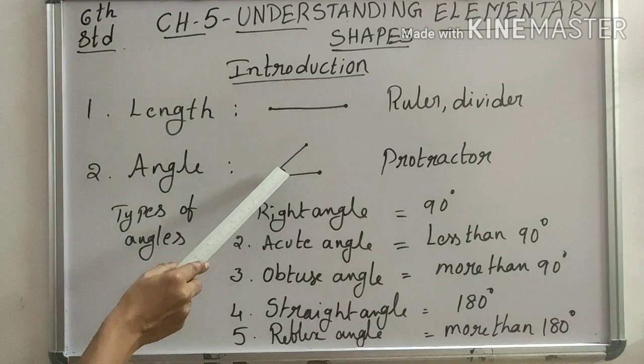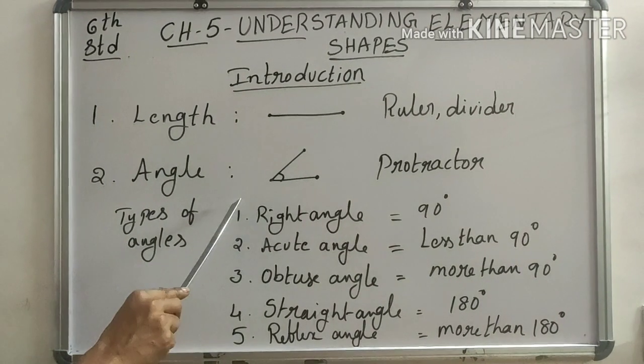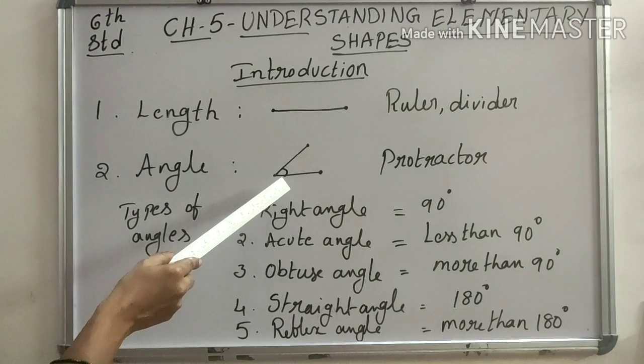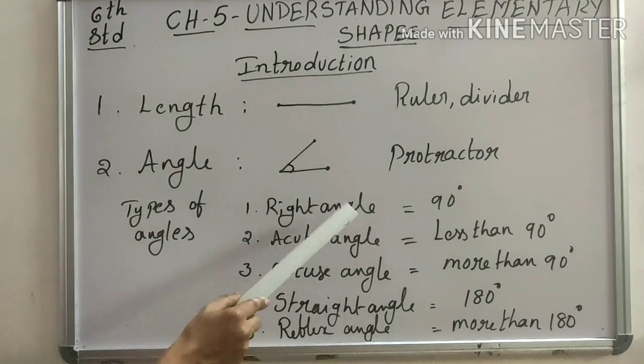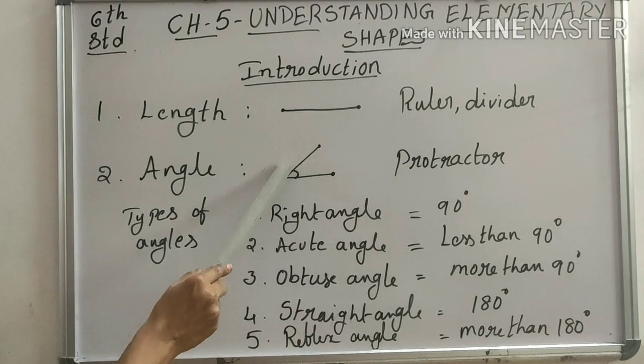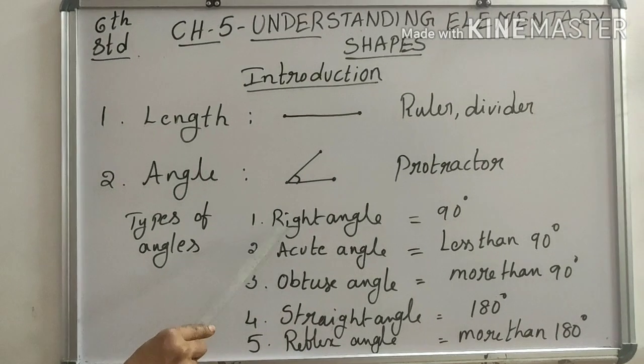If the angle between the two lines is less than 90 degrees, then we say that is acute angle. That means 90 degrees se kam hoga to usko acute angle kahenge.